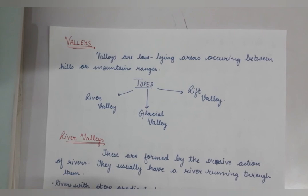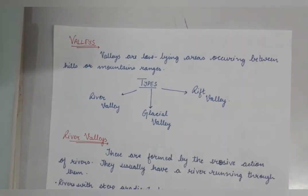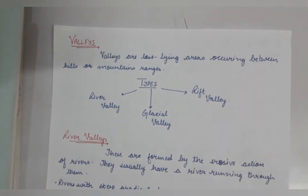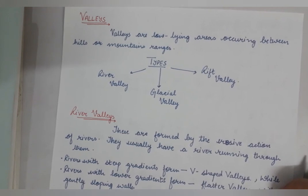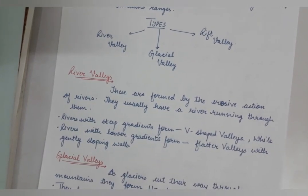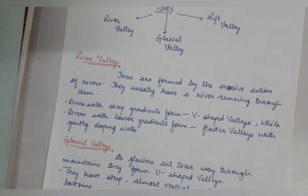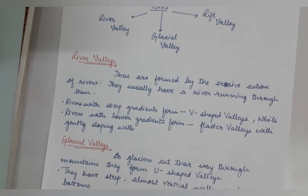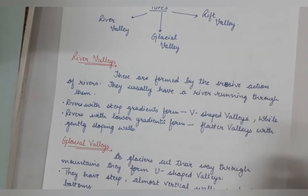As you have seen, valleys are of different types. Valleys are low-lying areas present between hills or mountain ranges. There are three types: river valley, glacial valley, and rift valley. River valleys are formed due to the erosive action of rivers. When the gradient is very steep — a steeper gradient means a steeper slope — the rivers cause erosion and form V-shaped valleys.